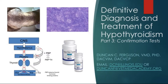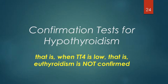Now let's say we've got, for example, a low total T4, and we want to confirm hypothyroidism. We know that a low total T4 by itself does not confirm hypothyroidism. A normal total T4 tends to confirm euthyroidism, but when it's low, it makes euthyroidism less likely, but neither euthyroidism nor hypothyroidism is confirmed. This brings us to additional tests.